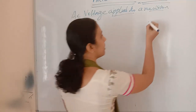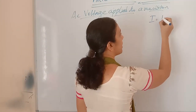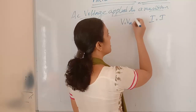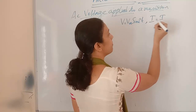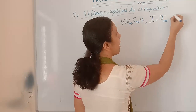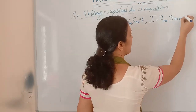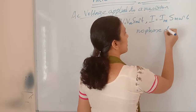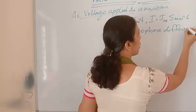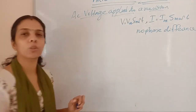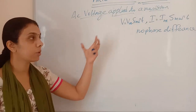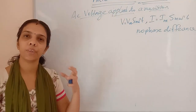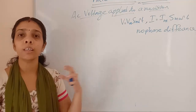So what was the final conclusion? If we apply a voltage V = Vm sin(ωt), then we get a current of Im sin(ωt). There is no phase difference between current and voltage, and we drew the phasor diagram for that circuit.